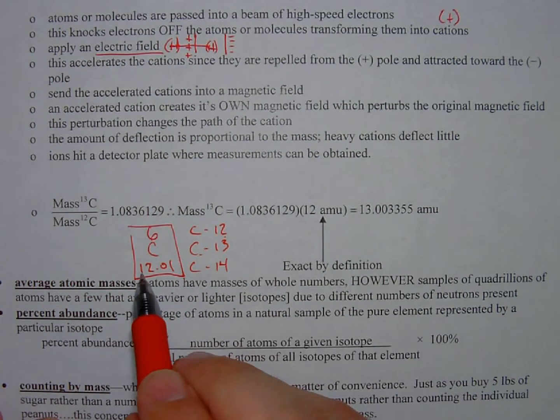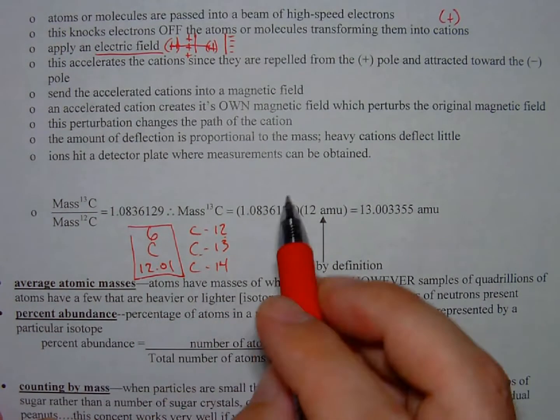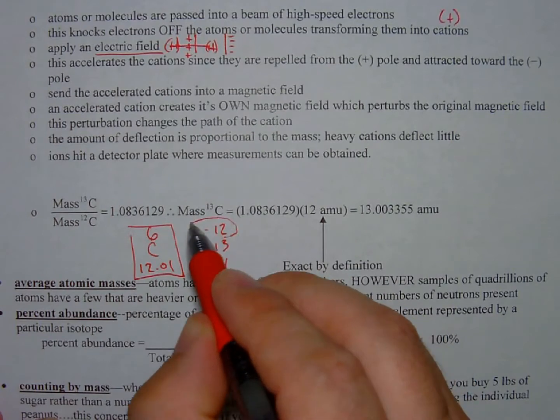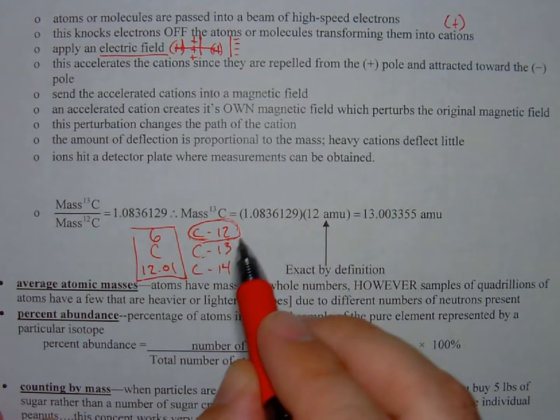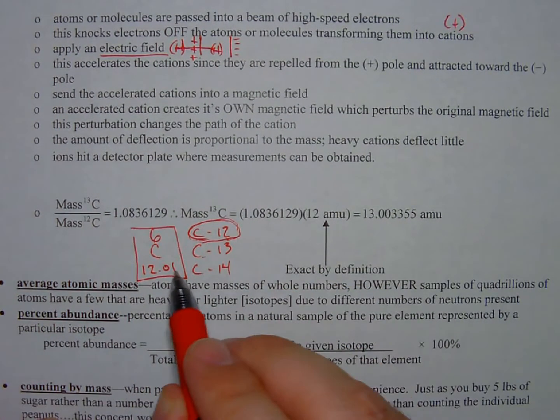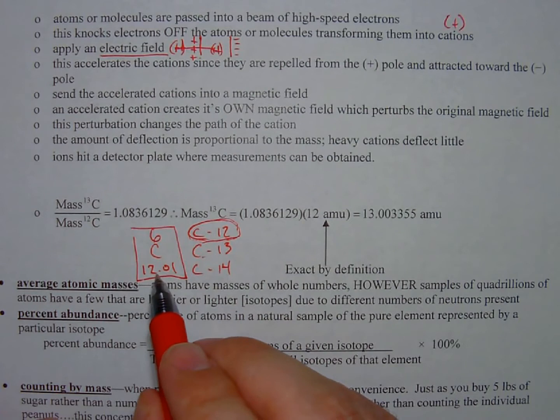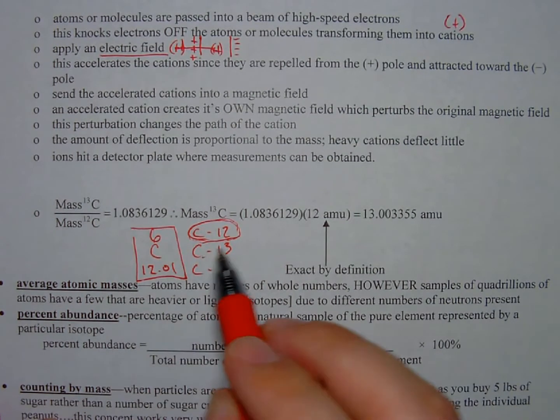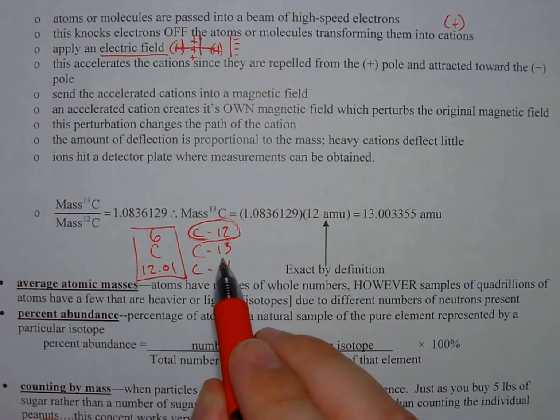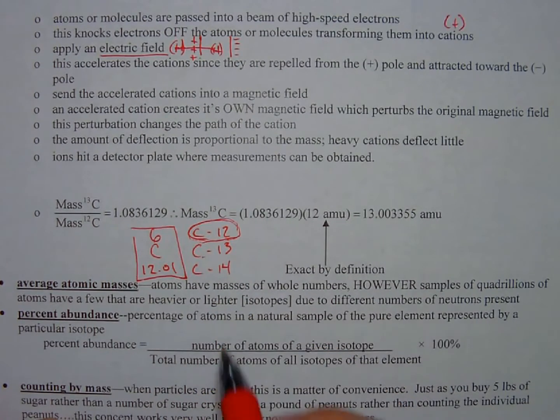The reason that this is 12.01 is because there is so much more carbon-12 than there is carbon-13 or 14 that it drives the average atomic mass of carbon down. According to this, there is very little carbon-13 and carbon-14.